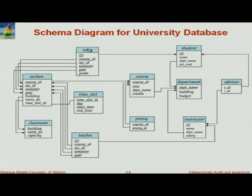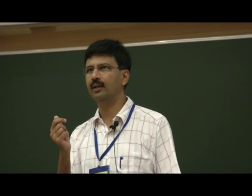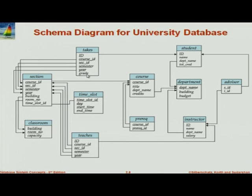There is a relationship between section and student which is 'takes.' The student takes a course, but the student actually doesn't take a course directly — the student is attending a section of the course. So the relationship of a student to the course is indirect. There's a takes relation with an ID of the student, and those four attributes are the primary key of the section relation. And finally, there's a grade. A grade is given at the end of a course, so until then, the value for this field is null.